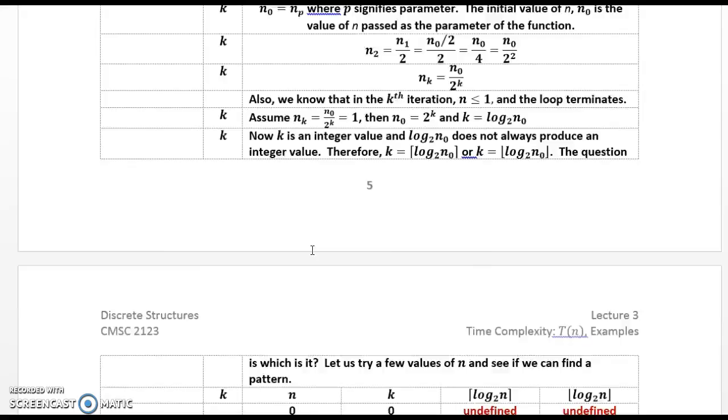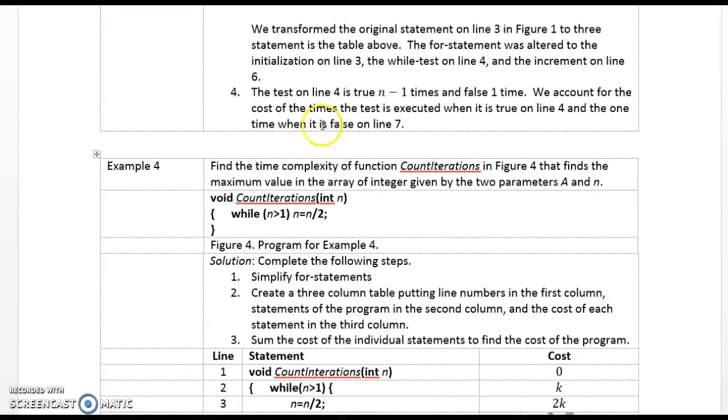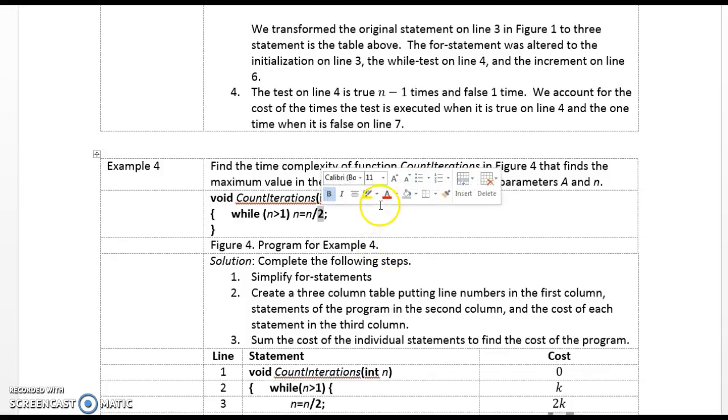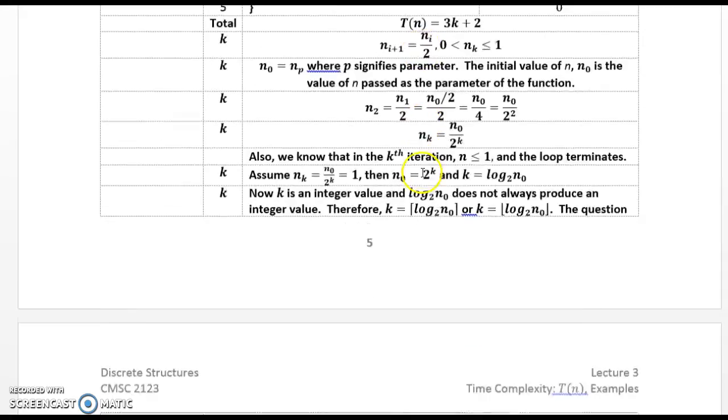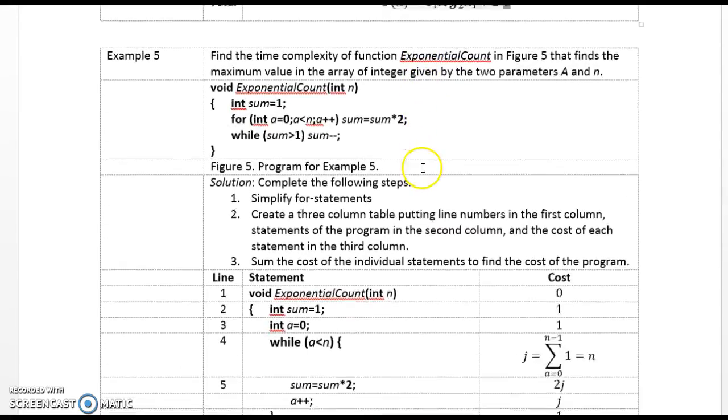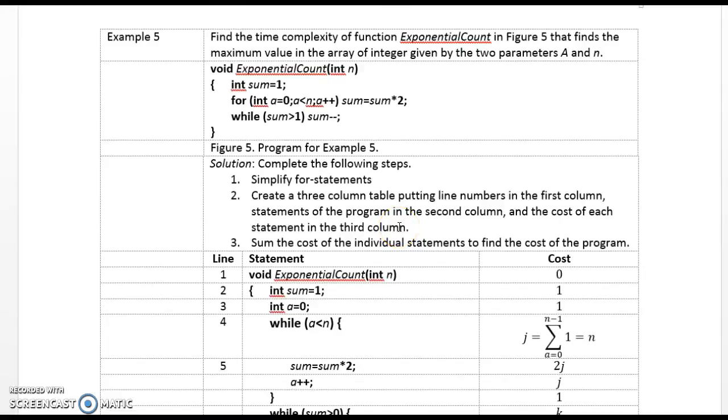So in general, whenever I iteratively divide a value by 2, and that's controlled in the loop, then that's going to be a logarithmic function. And the base of the log is going to be the value that is divided by, in other words, if we were dividing by 4, it would be log 4, if we were dividing by 52, it would be log 52.